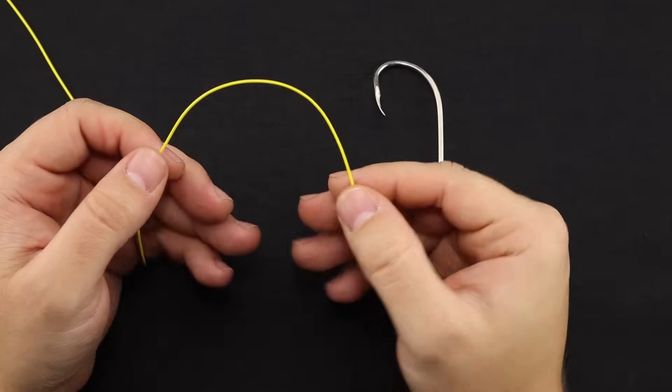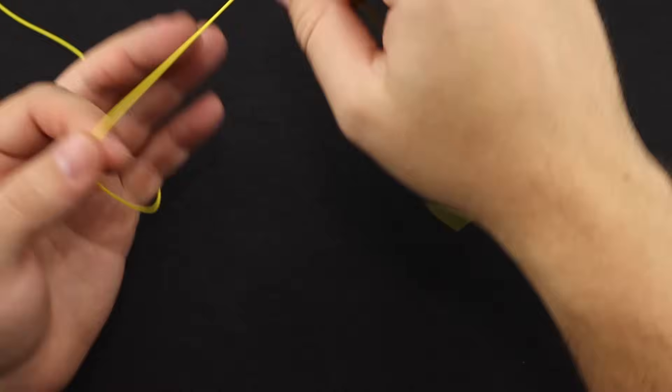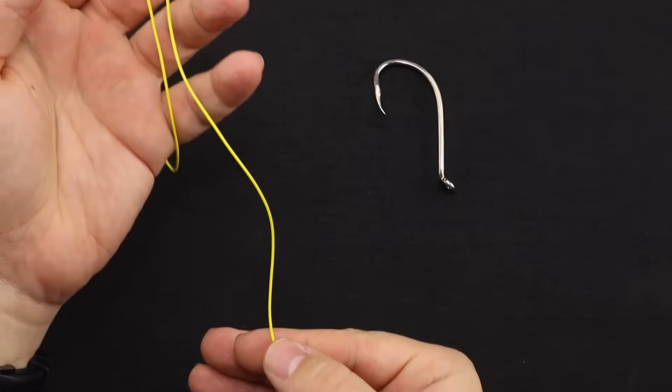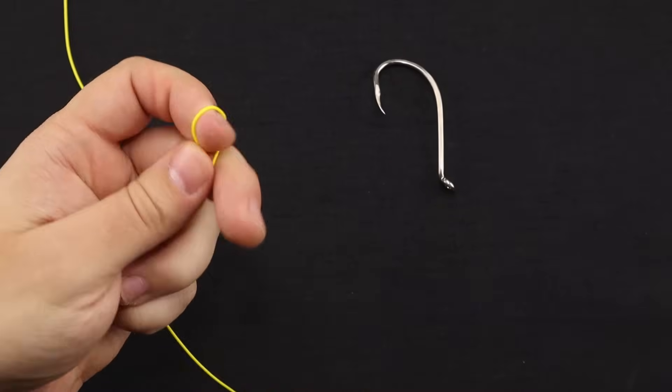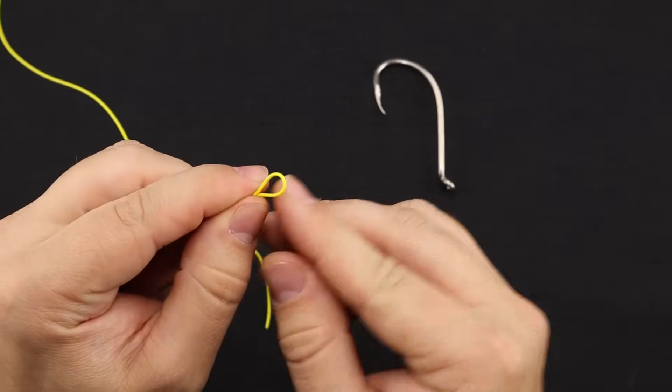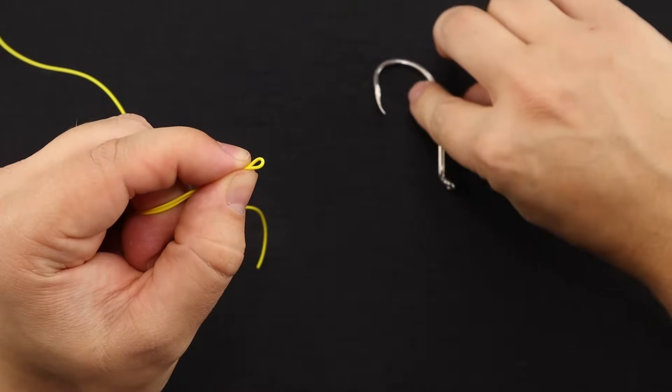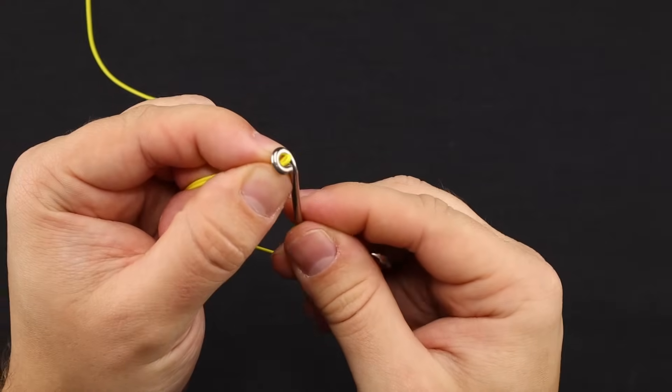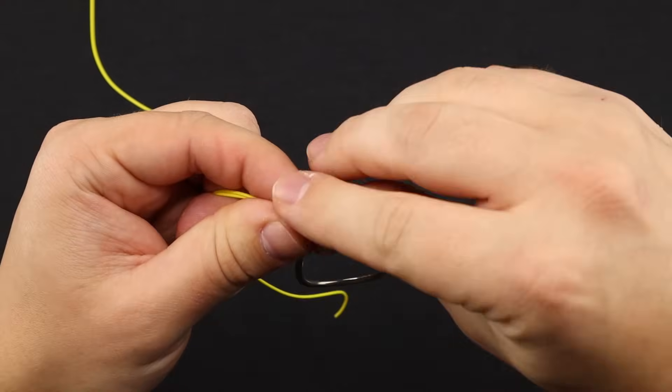Alright, so for the Palomar knot, with your line you're going to go ahead and double that over. I like to do about six to eight inches here. And then with the loop end, you're going to want to pinch that small enough that it will fit through the eye of the hook. Place that through.